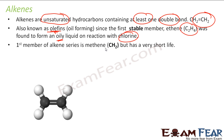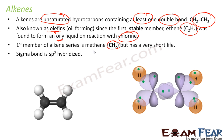The first member of this series is CH2, but it is very, very unstable. It has a very short life. So we generally say the first stable member is ethene, but the first member is CH2 — it has very short life.